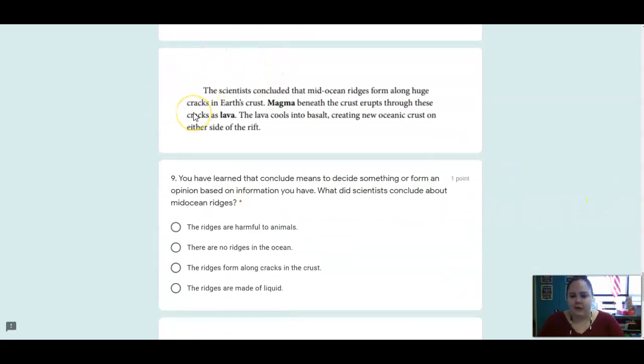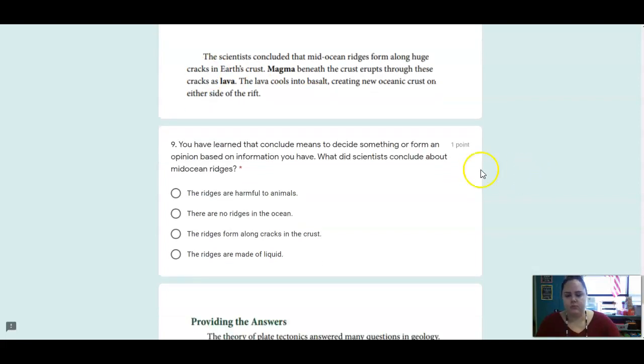All right, here's another paragraph we're going to look closely at. The scientists concluded that mid-ocean ridges form along huge cracks in Earth's crust. Magma beneath the crust erupts through these cracks as lava. The lava cools into basalt, creating new oceanic crust on either side of the rift. It says you have learned that conclude means to decide something or form an opinion based on information you have. What did scientists conclude about mid-ocean ridges? So use that paragraph here to find the answer.